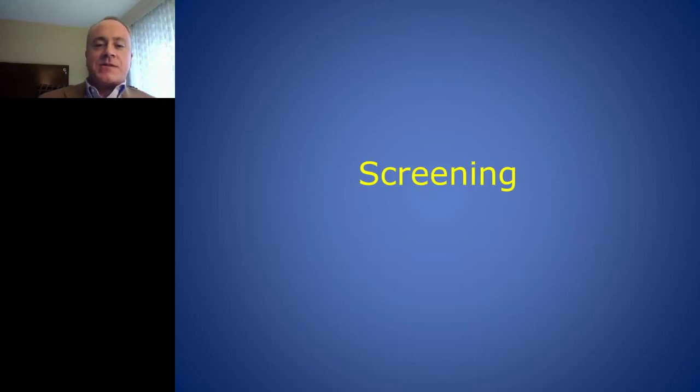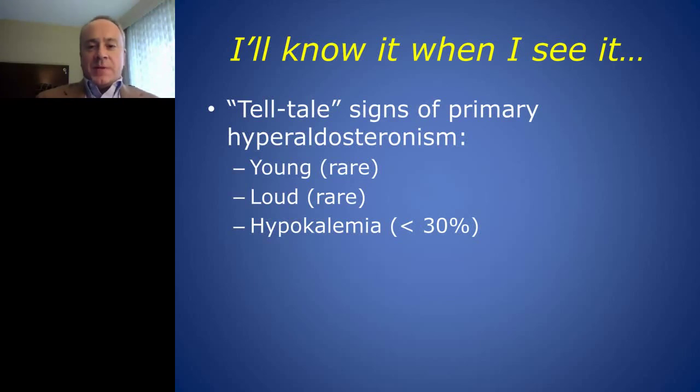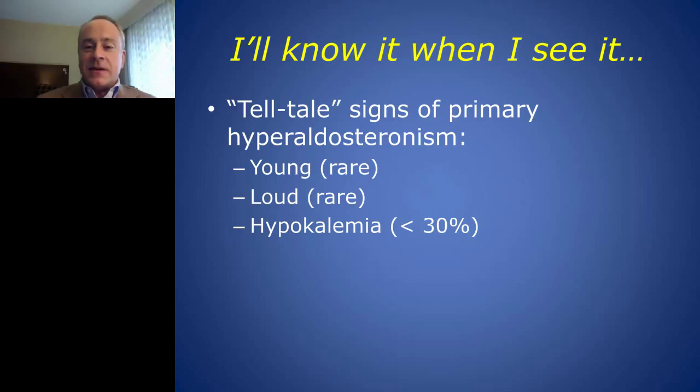What is the screening process for primary aldosteronism? Most people say they know it when they see it — describing telltale signs such as young patients with severe hypertension and hypokalemia. However, these presentations are rarely the case. In reality, the majority of patients who have primary aldosteronism actually do not present with low potassium levels. As such, the Endocrine Society updated their screening guidelines, identifying six points for case detection.